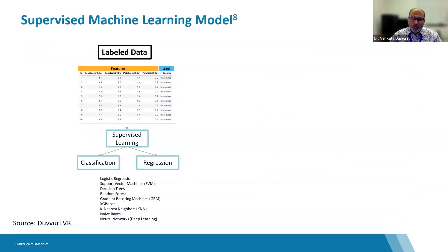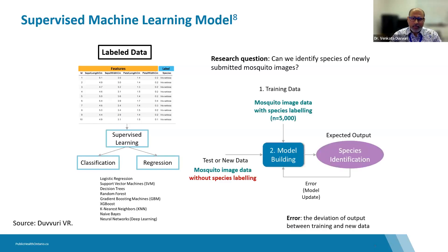For supervised machine learning, if we have labeled data, we commonly utilize supervised models. Labels provide prior knowledge to the supervised learning model. Classification and regression are common tasks in supervised learning. In this toy model, the research question is: can we identify the species of a newly submitted mosquito image? A supervised machine learning model trained on labeled mosquito images can predict the species of new, unlabeled mosquito images.